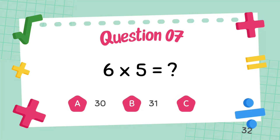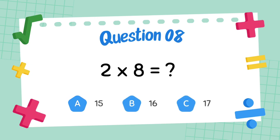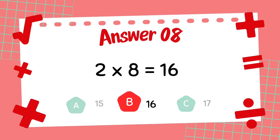What is 6 multiply 5? The answer is 30. What is 2 multiply 8? The answer is 16.